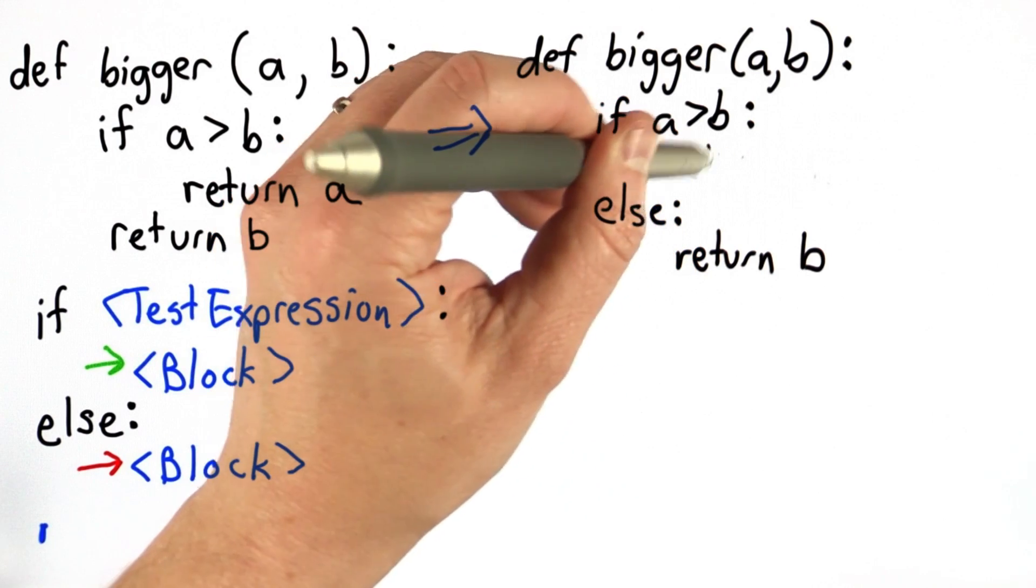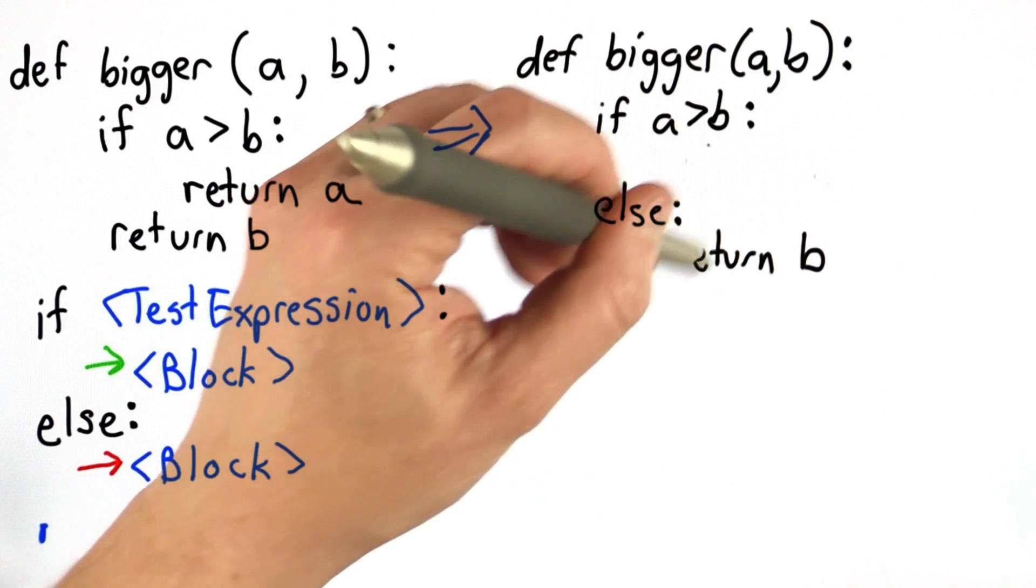If we didn't want to have two returns, maybe we'll want to do something else with the result instead of just return it. Well, with the if-else, we can do that.